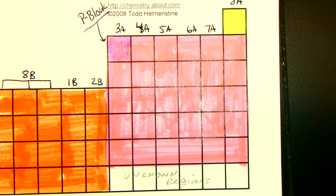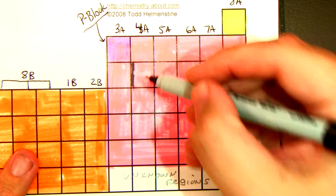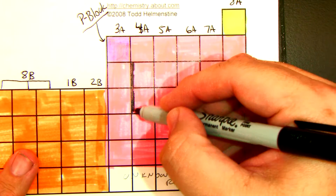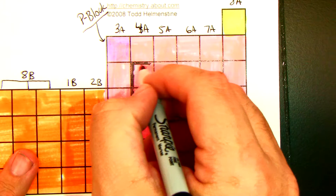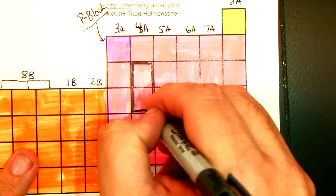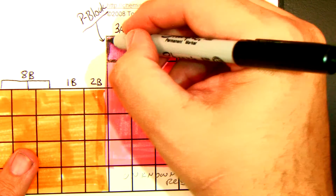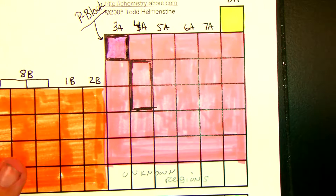You can shade them in, or I'll show you a different way — if you don't want to shade it in so you don't lose that box. It kind of forms like a staircase. If you want to highlight and just bold those boxes instead of shading them in, that might make it a lot easier. These are the metalloids, and they're kind of like the wall between the metals and the non-metals, and they share characteristics.